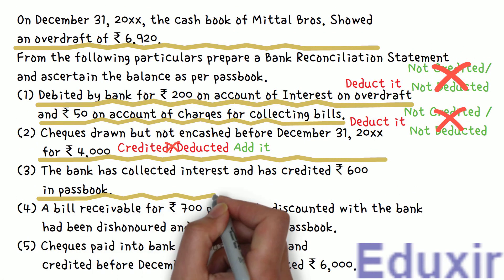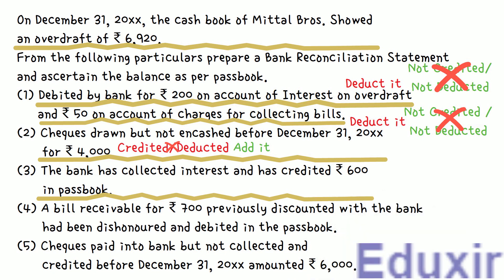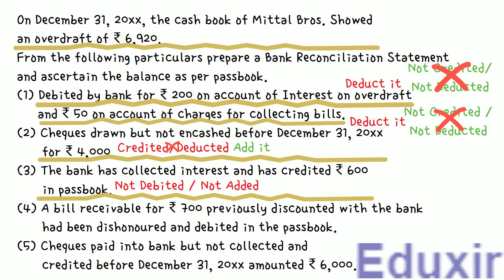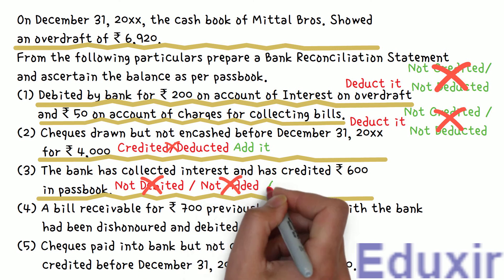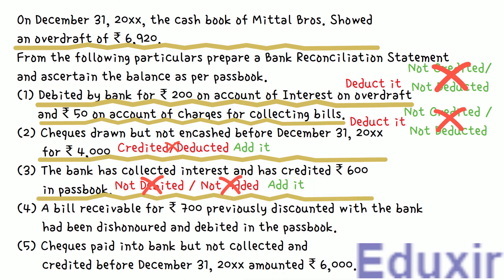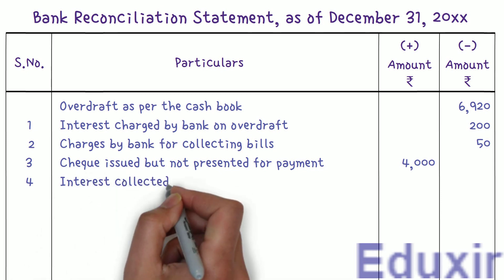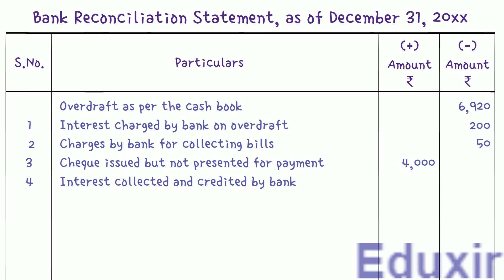The bank has collected interest and credited the bank passbook with 600 rupees. When the business has cash investments or has given a loan, the interest will be credited in the passbook. However, the business does not know about these interest amounts until the bank statement is received, so this amount will not be debited in the cashbook. We need to add this amount to the cashbook balance to get the passbook balance. We write 'interest collected and credited by bank' and enter 600 rupees in the plus amount column.